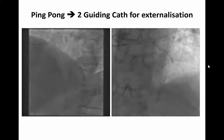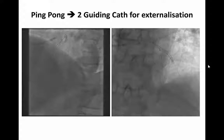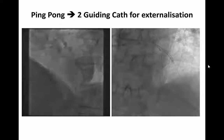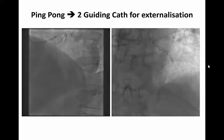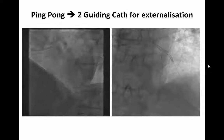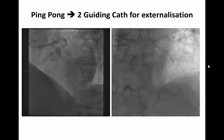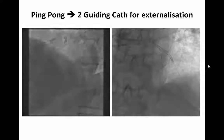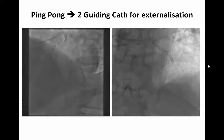After that I can cross the CTO with a Pilot wire and also place this Pilot 200 inside the stent of the proximal LAD, because this is like a stent-assisted reverse CART. To avoid any problem, I use a second catheter — this is a ping-pong technique. I place a second guide catheter and also a guide catheter extension for externalization.